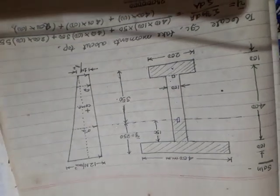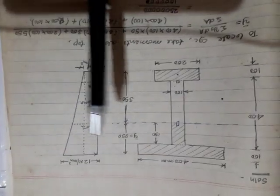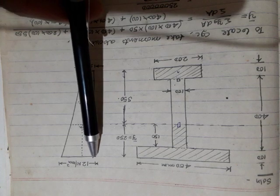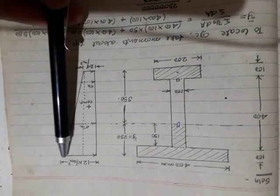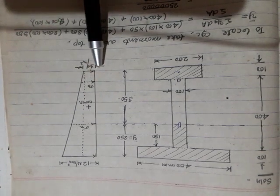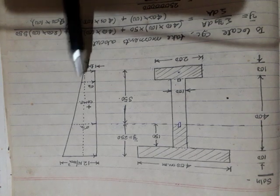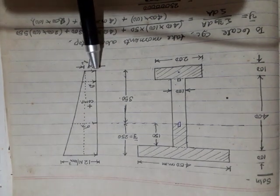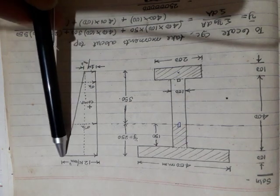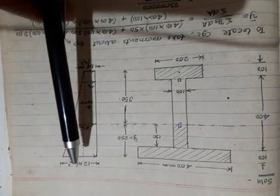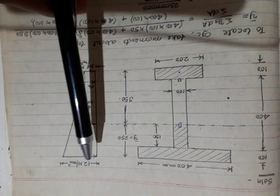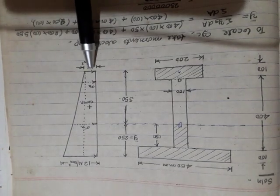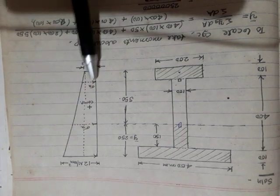The horizontal compressive stress varies from 12 N/mm² at the top to 1 N/mm² at the bottom. This is the stress distribution diagram for the section — 12 N/mm² at the top and 1 N/mm² at the bottom, as given in the problem.